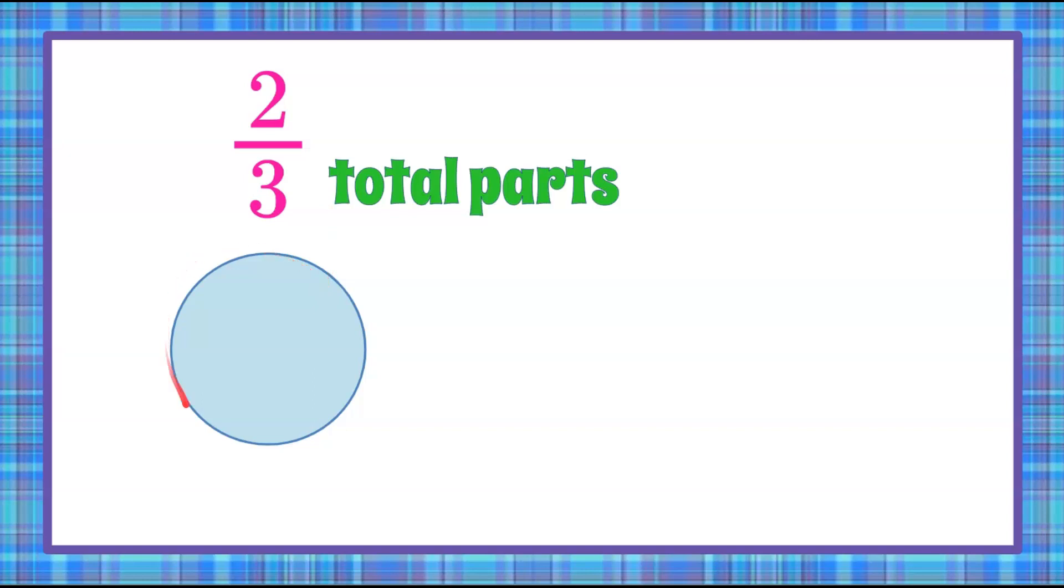So we're going to take a whole of something. I'm using a circle, but it could be a rectangle or a square. It could be a cookie, a cake, anything you want it to be. And we're going to divide it into three equal parts. So the denominator tells you, of your whole, how many parts you're going to have.